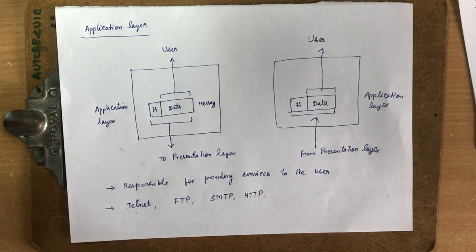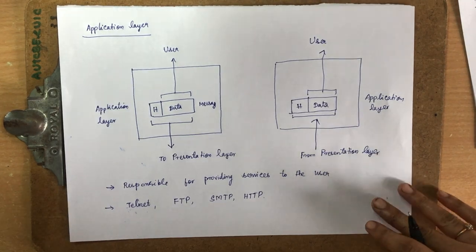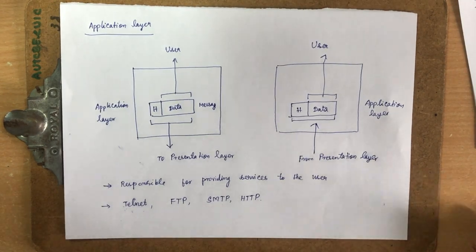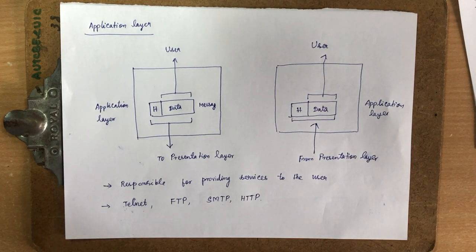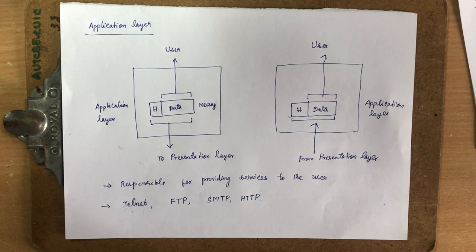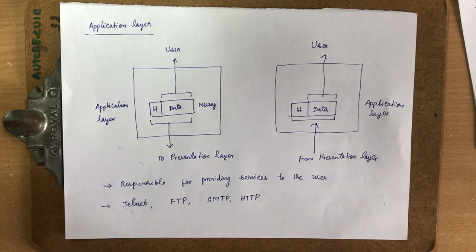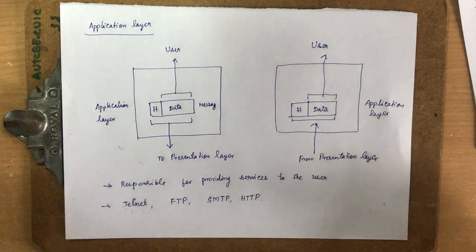In this ISO OSI model, we have learned about the seven layers and the functionality of each layer, and we have seen how a message is transmitted from one end to the other. Thank you.